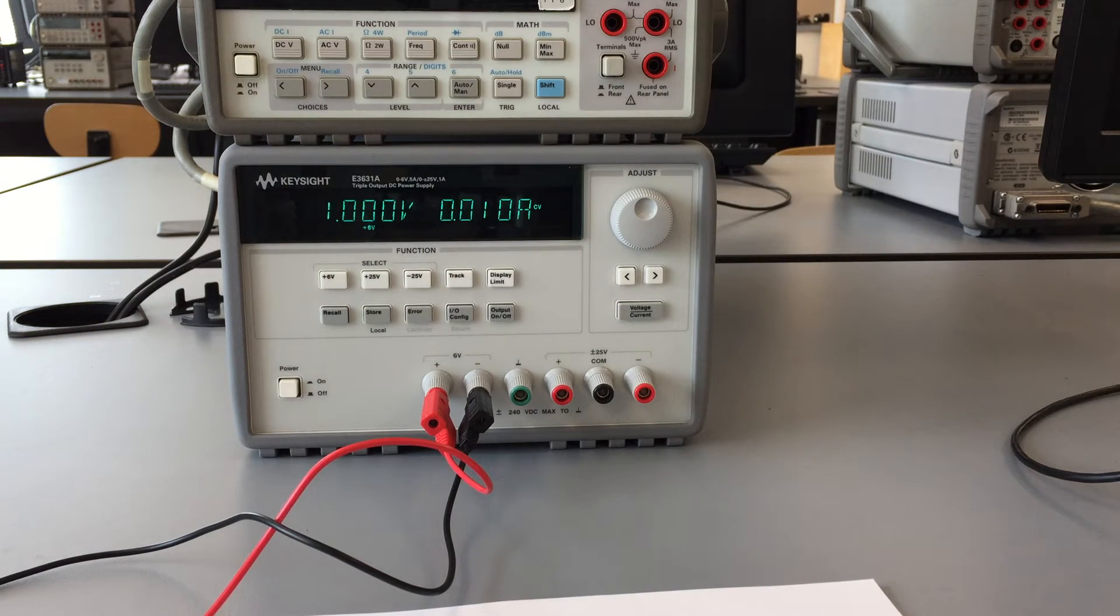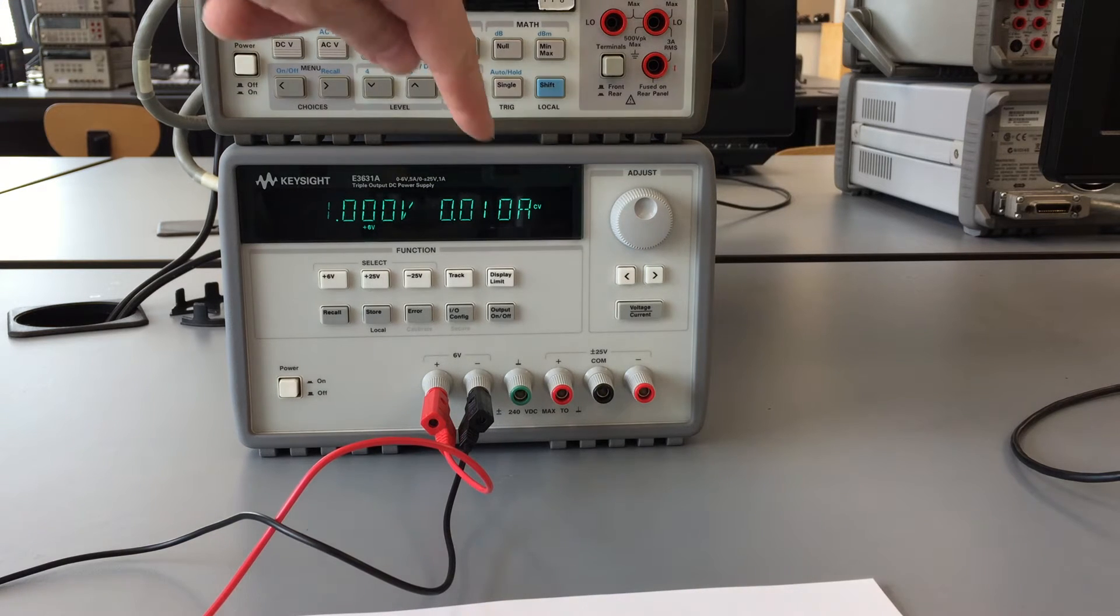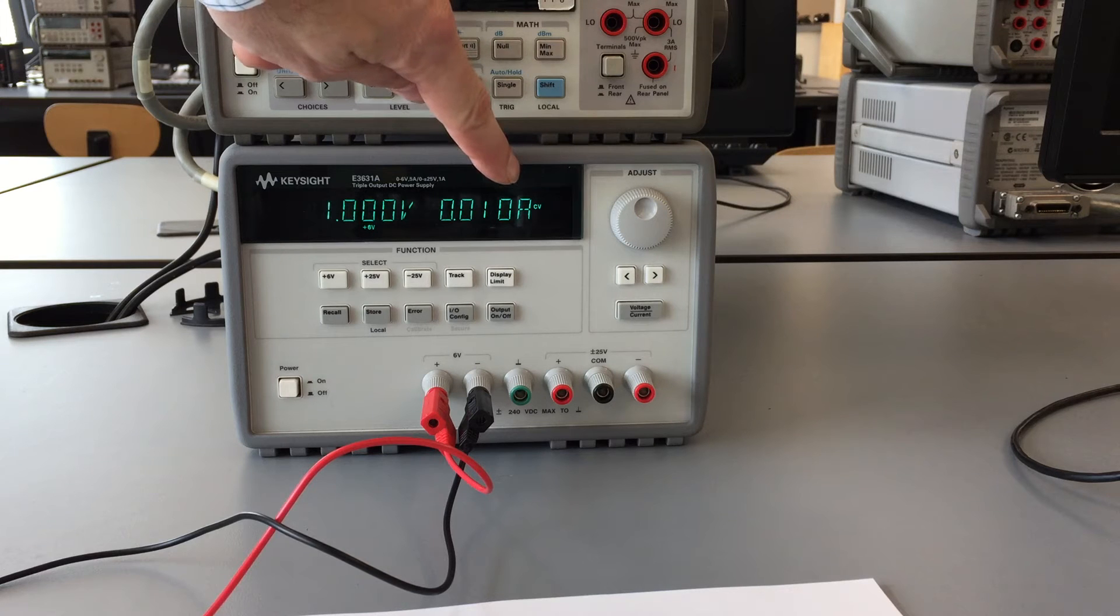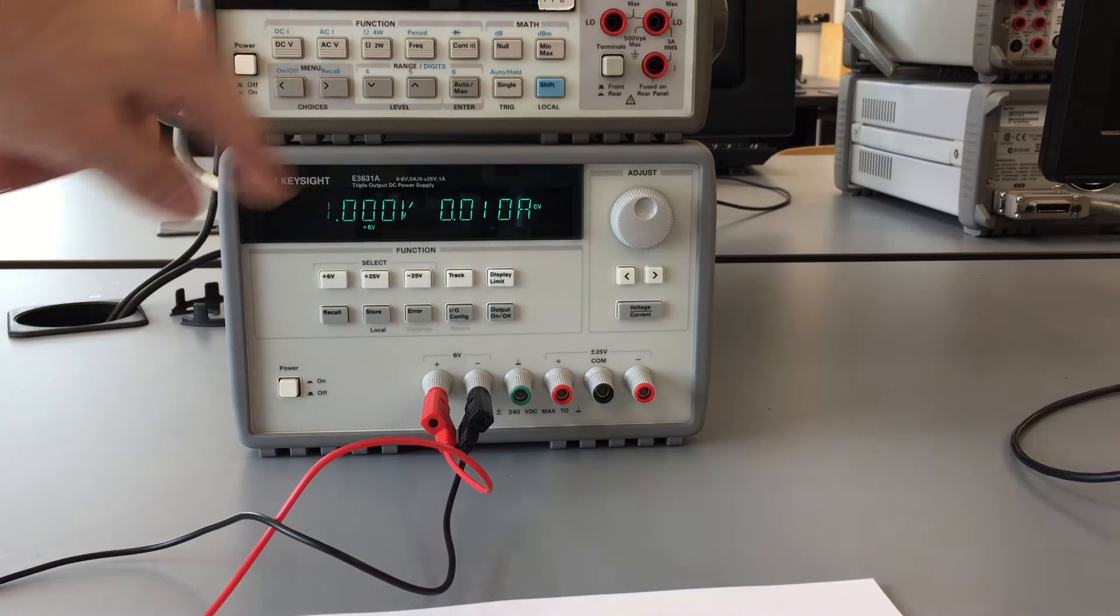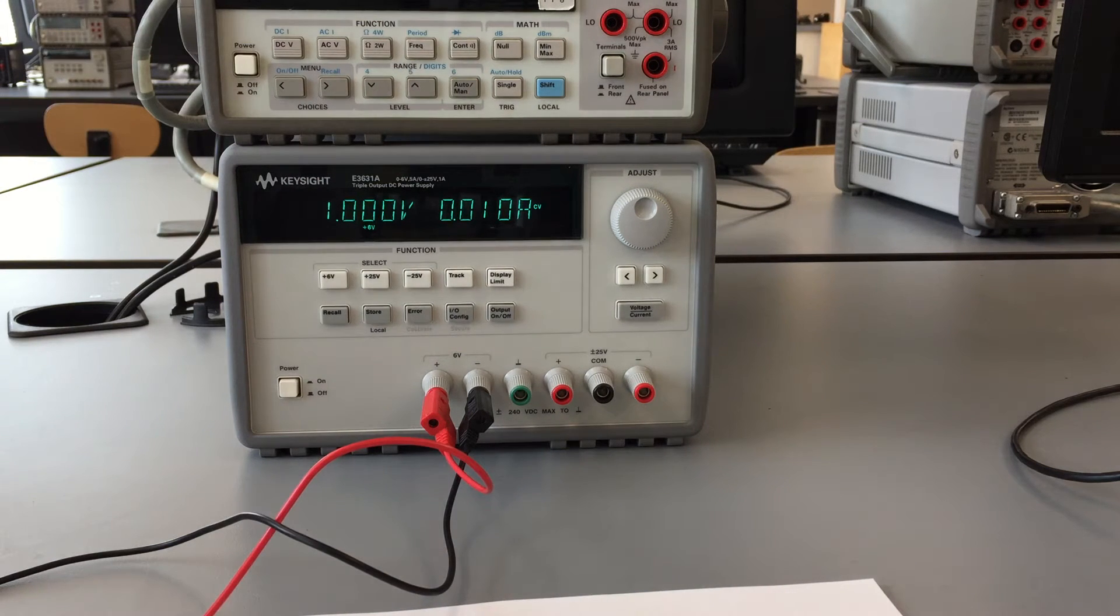Now if we want to measure the current of the circuit, there's two ways we could do it. We could use the ammeter on the power supply right there, and it's saying that there's 10 milliamps going through, which makes sense because we have one volt being dropped across 100 ohms. One divided by 100 is 0.01, so everything is good.